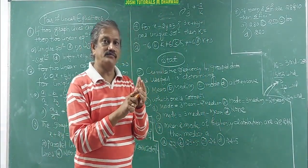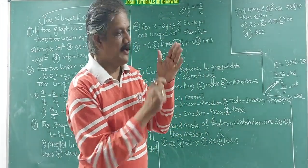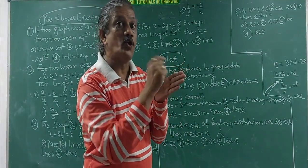Mean is equal to summation of fi xi divided by summation of fi. For median, class interval and frequency they give, you have to find out cumulative frequency.